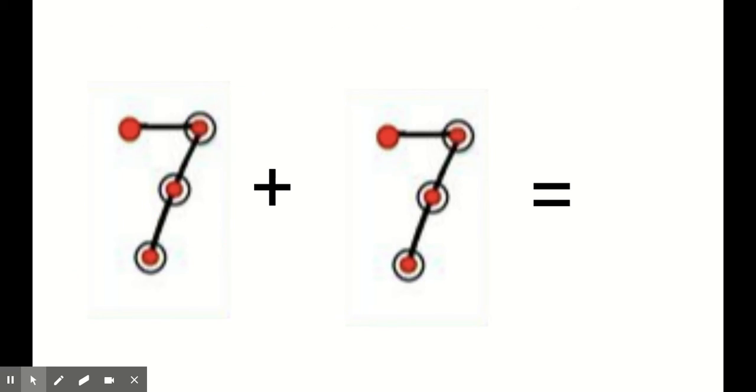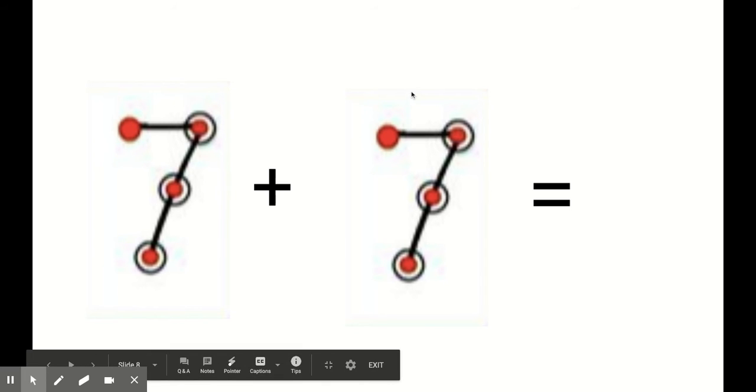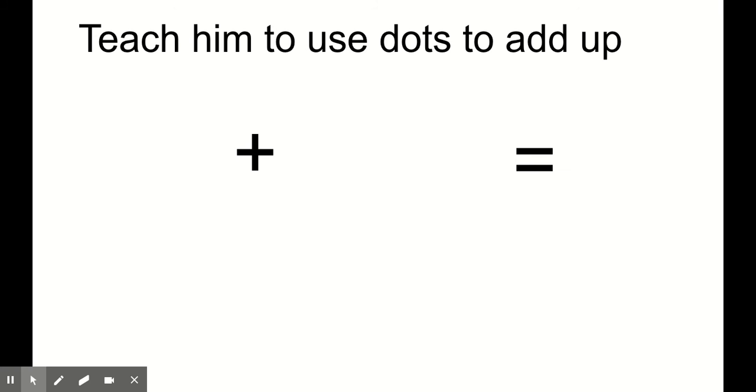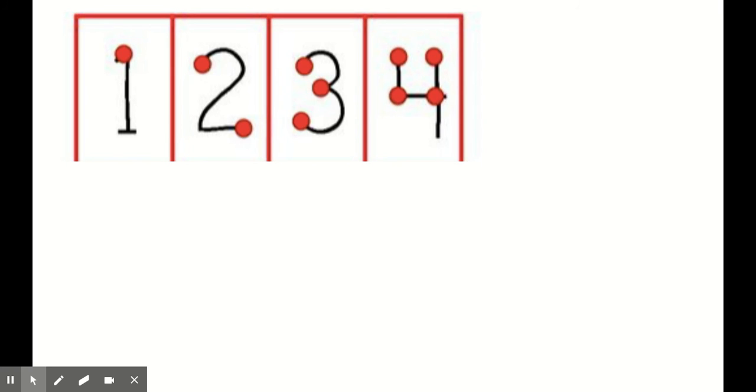You just count each one twice. So here's an example of seven plus seven. You don't have them touch it on the first one, they just count up and go eight, nine, ten, eleven, twelve, thirteen, fourteen.